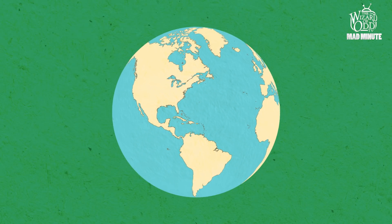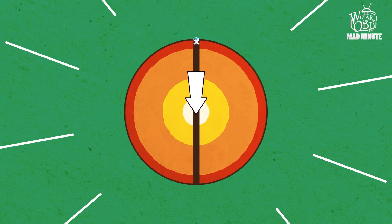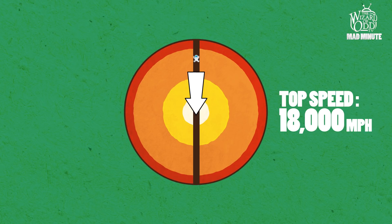Even though it's physically impossible to travel through the Earth, initially gravity's pull would accelerate you down towards Earth's core, up to 18,000 miles per hour.